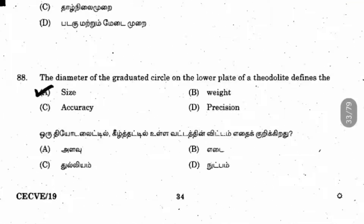Question 88: The diameter of the graduated circle on the lower plate of the theodolite defines what? The answer is the size of the theodolite. They may also ask which component determines the size of the theodolite — it is the lower plate's graduated circle.